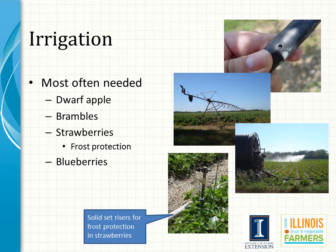Uneven precipitation can cause plant stress during critical growth periods, which will affect both crop productivity and fruit quality. Most fruit crops require irrigation to minimize plant stress. Proper timing of water applications can increase the yield and quality of most fruit crops in Illinois in most years. Drip and overhead irrigation are the most common throughout Illinois. Overhead irrigation can also be used to provide frost protection for certain small fruit, particularly strawberries, down to 22 degrees Fahrenheit or lower.